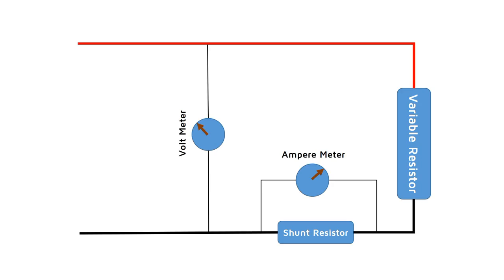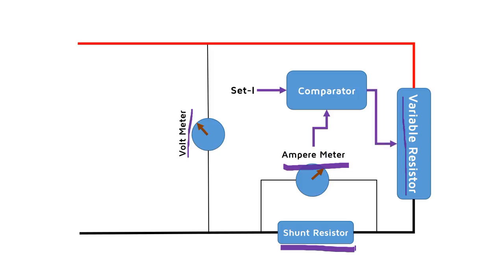If we summarize what we learned so far, we see that the electronic load consists of a variable resistor, an ampere and a voltmeter, a comparator, and an input device to select the desired current. The current is measured with a so-called shunt resistor which is in series to the load. And the comparator compares the real current with the desired current and adjusts the resistor. That's all. No rocket science.